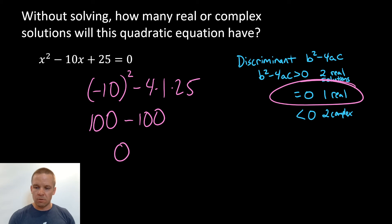So if it's zero, we get one real solution. Why is that? Well, if I think about my quadratic formula, it's plus or minus the square root of this discriminant, right? So plus or minus zero, if I add zero and subtract zero, is that going to change anything? No, I'm only going to have one unique solution there. So one real solution.